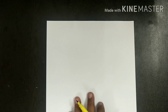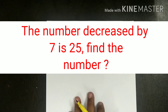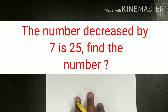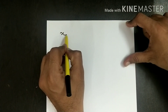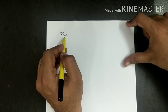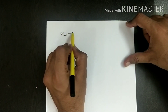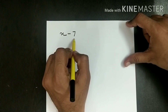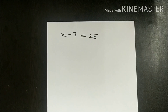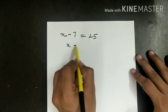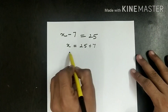Word problem: A number decreased by 7 is 25. Find the number. If the number is x, then x - 7 = 25. Solving: x = 25 + 7 = 32.